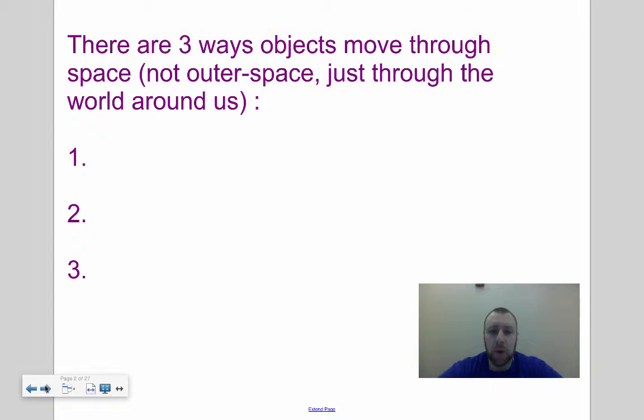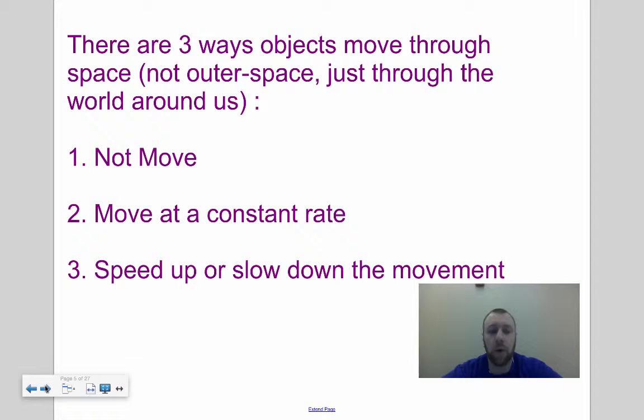When I talk about motion, there are three basic ways objects move through space. Everything in the world is described by moving in three different ways. Things can not move, they can stand still, move at a constant rate, or speed up or slow down.